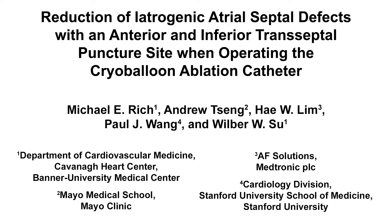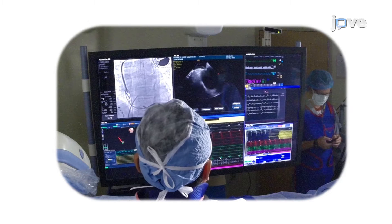The overall goal of the following experiment is to facilitate effective cryoballoon occlusion, which will then result in pulmonary vein isolation and return to normal sinus rhythm. This is accomplished by first finding the fossa ovalis, or FO, location.